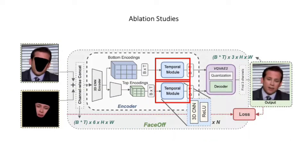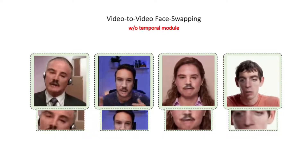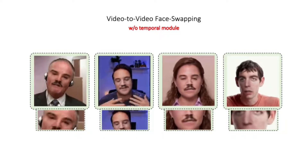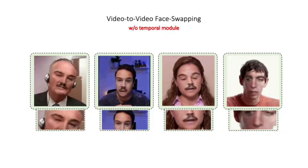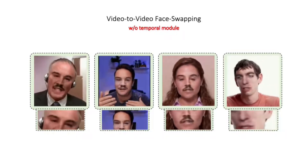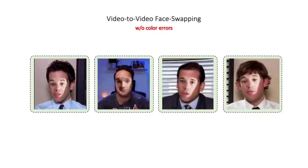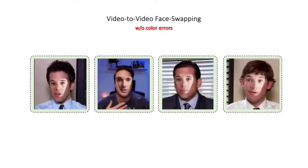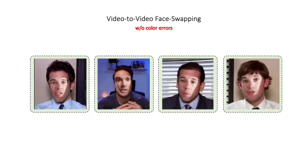Next, we show some ablations on our architecture. We first show the effect of the temporal module, which plays an important role in achieving temporally coherent outputs. Faceoff learns to blend two motions; however, without a temporal connection between frames, Faceoff cannot blend in a temporally consistent manner. The videos have significant wobbles and the faces squish and extend across the video, and there is also a vibrating effect. We also show the effect of removing the color error in self-supervised training: although the model learns to align the foreground and background, the color in the output does not blend well, causing temporal jitters, and the model gets stuck at a sub-optimal alignment.